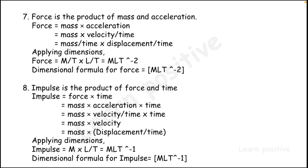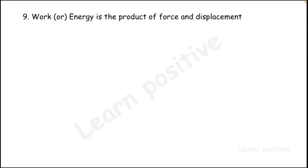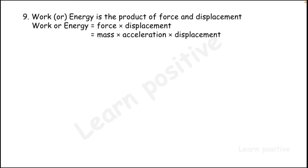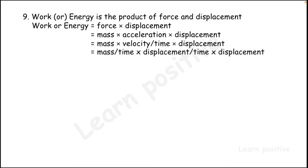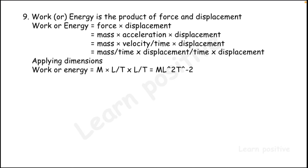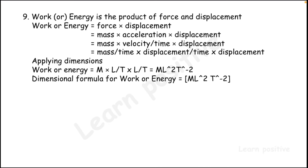Work or energy is force × displacement. Using mass × acceleration × displacement, and substituting velocity divided by time for acceleration, we get M × L² divided by T², so the dimensional formula of work or energy is M·L²·T⁻².